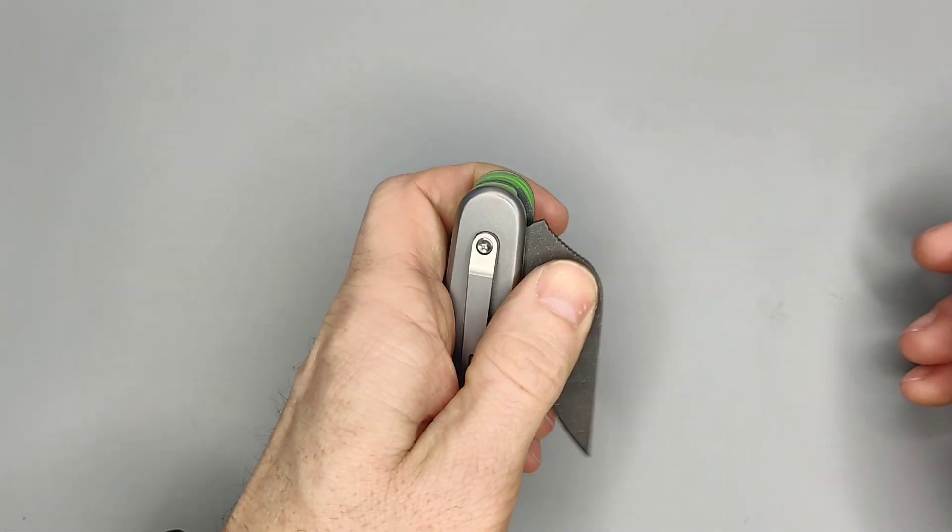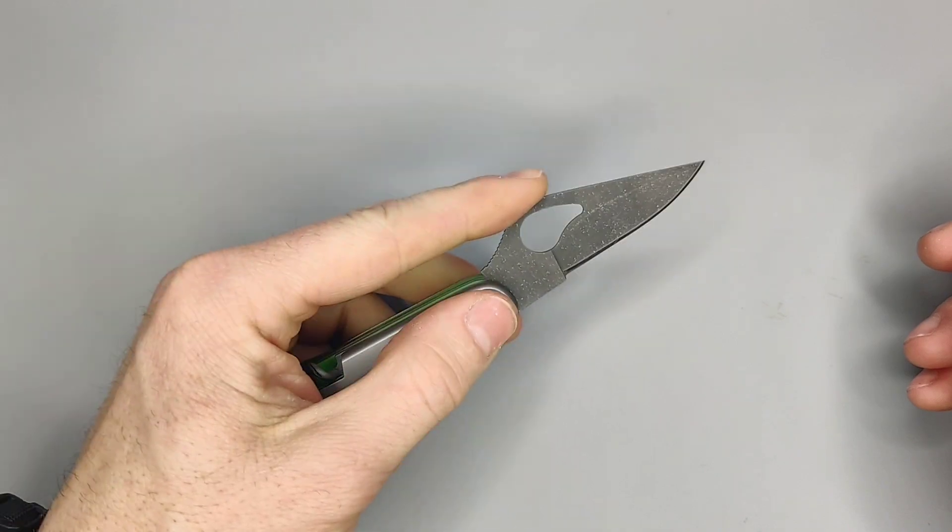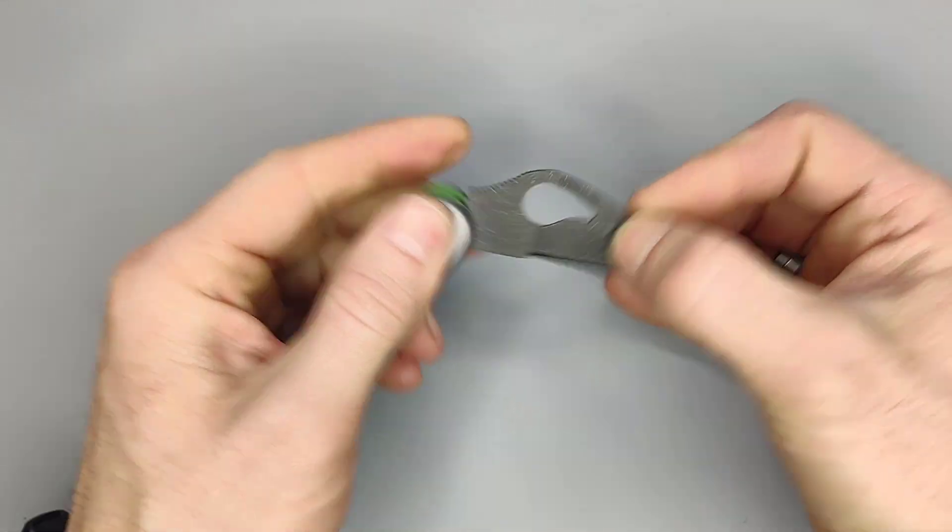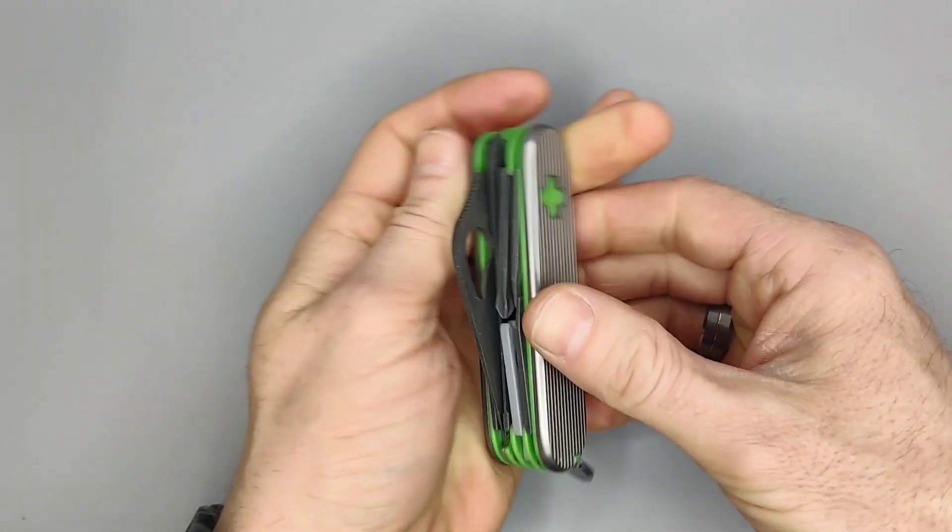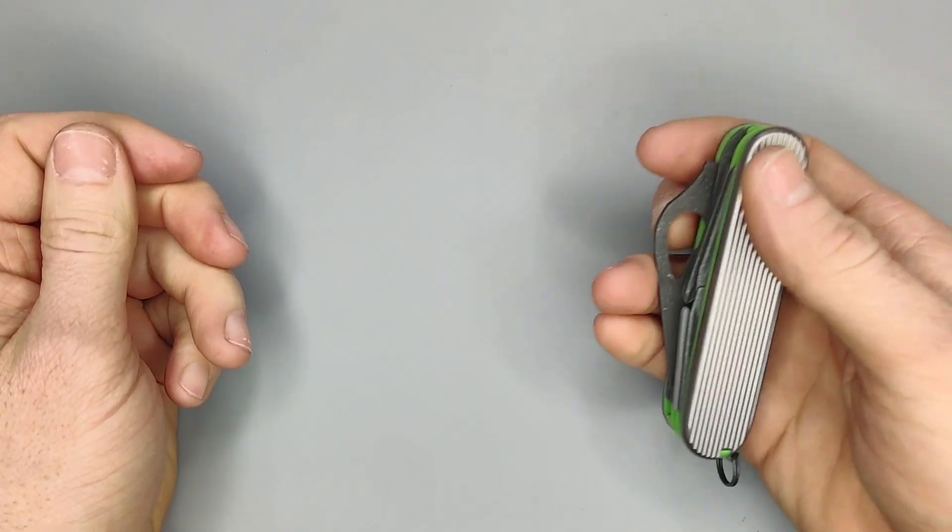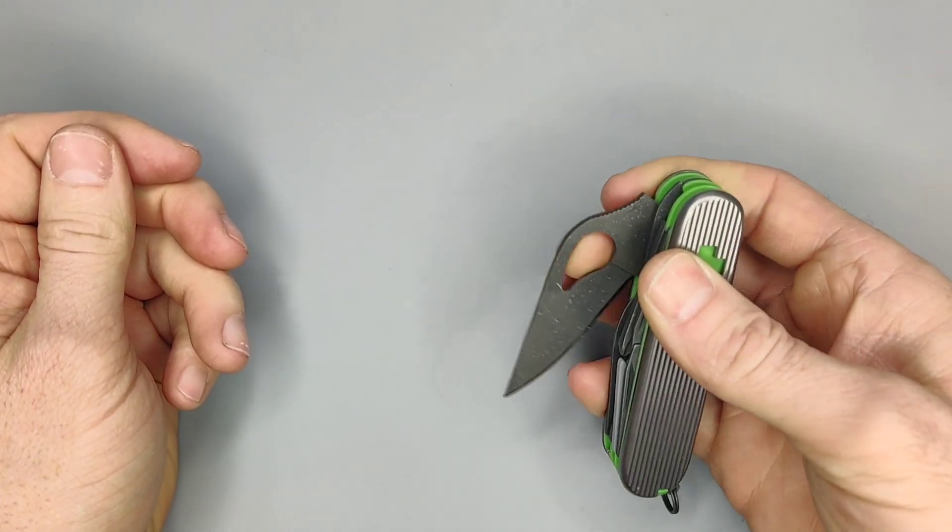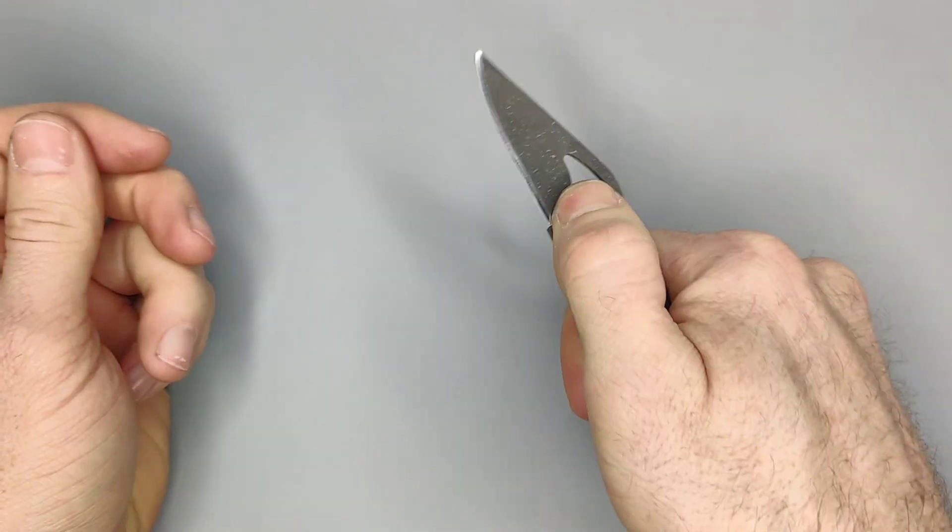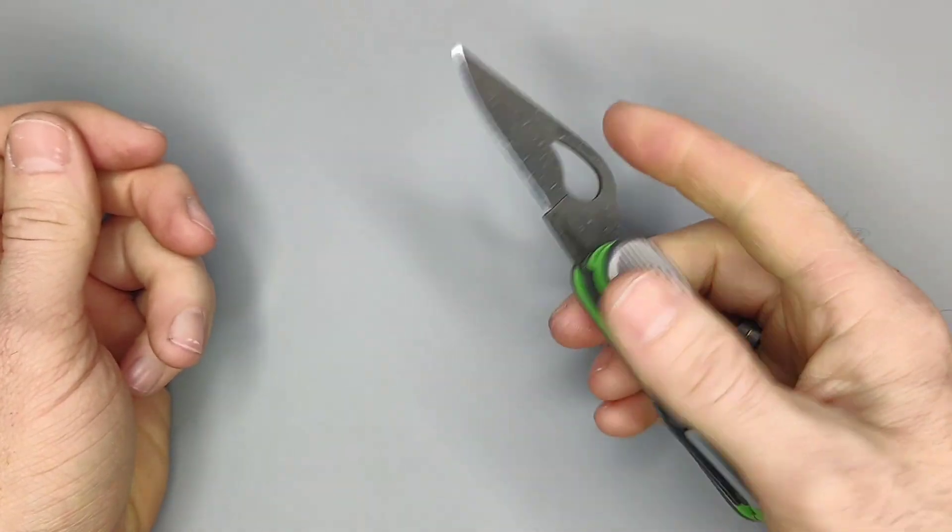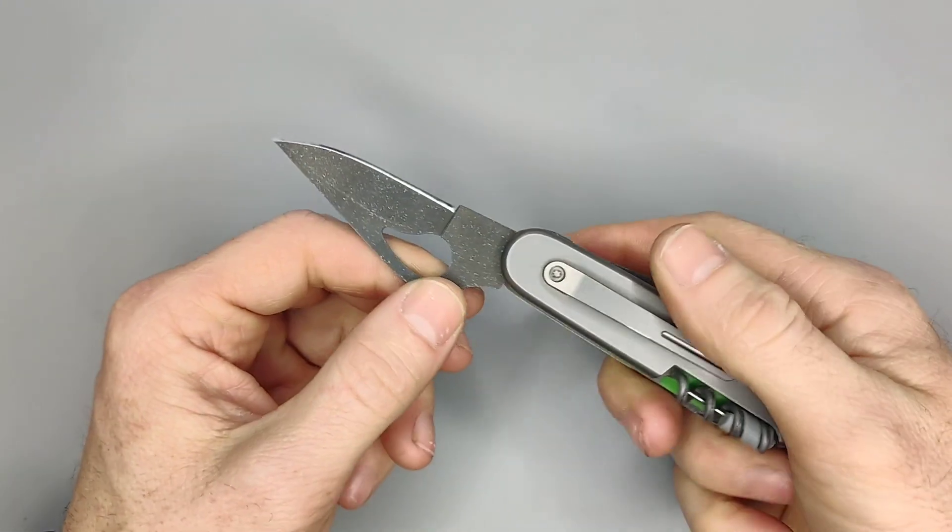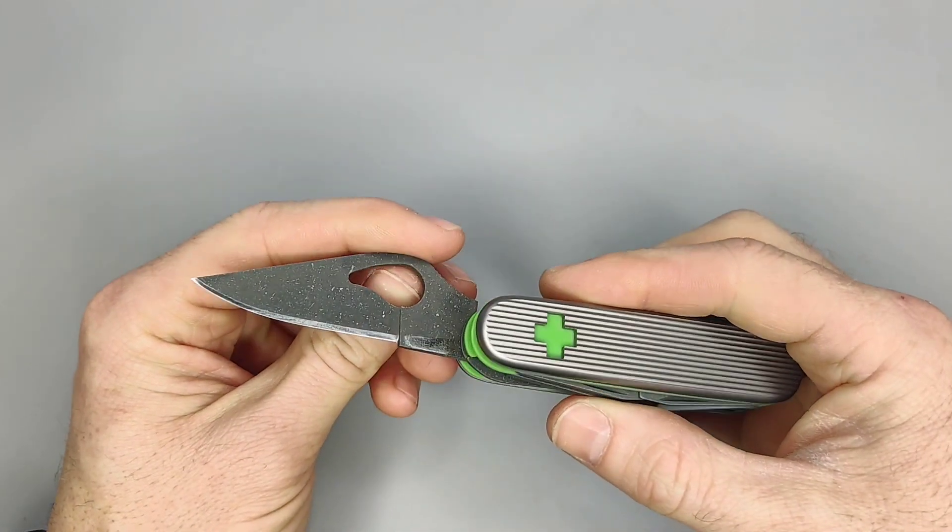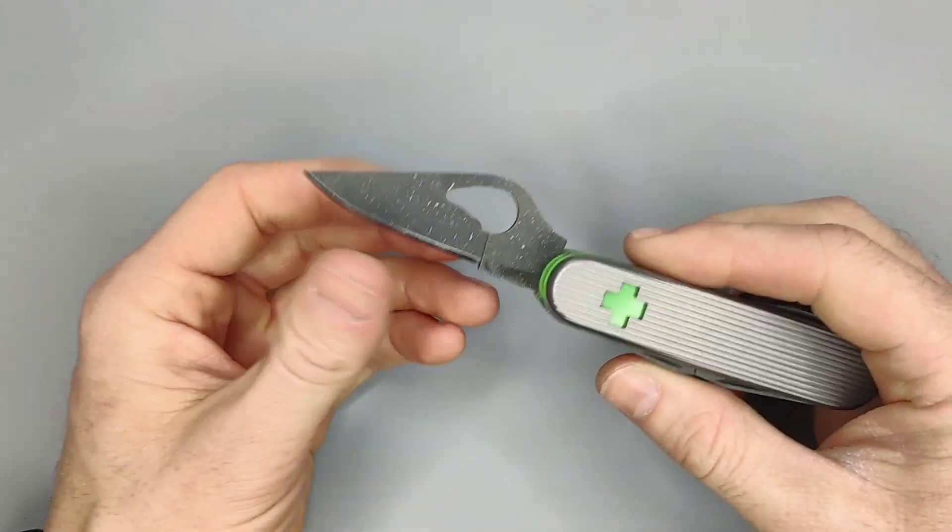One of the major advantages of having a Spyderco is the ability to open with one hand. The original knife isn't accessible with one hand, but this one is accessible with both your left hand and your right hand. With your right hand, it's easiest to open with your middle finger and then finish it up with your thumb. It makes it a lot easier to open, plus it's kind of nice having the Spyderco blade.